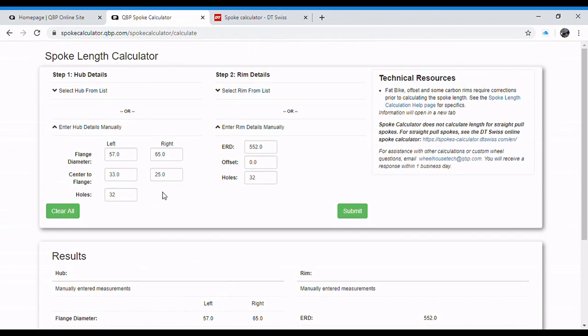If we were to do a fat bike hub, say it was 50 millimeters left and 50 millimeters on the right. All you would do if you had 10 millimeters of offset on the spoke holes, you would subtract 10 from that. So if it was 50, you'd go to 40, and then that will adjust for your offset in the rims.